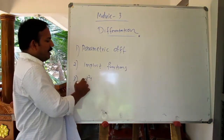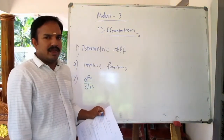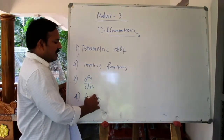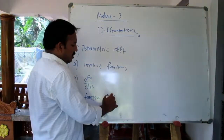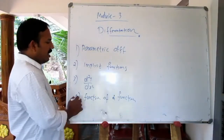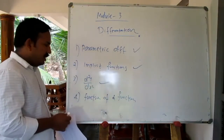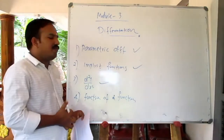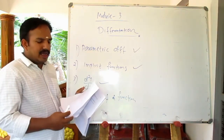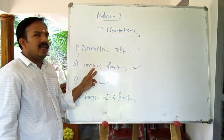If we have d²y by dx², we will learn how to do second order derivatives. We will also learn differentiation of function of a function — the chain rule method. In part 3, we cover parametric differentiation and implicit functions.